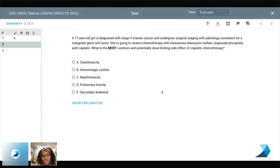All right. So this is a 17 year old girl is diagnosed with stage two ovarian cancer and undergoes surgical staging with pathology consistent with a malignant germ cell tumor. She is going to receive chemotherapy with IV bleomycin sulfate, etoposide phosphate, and cisplatin or BEP. What is the most common and potentially dose limiting side effect of cisplatin therapy? A, cardiotoxicity, B, hemorrhagic cystitis, C, nephrotoxicity, D, pulmonary toxicity, or E, secondary leukemia. What do y'all think?